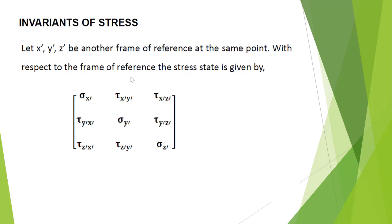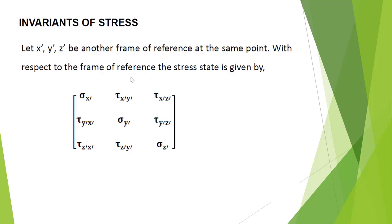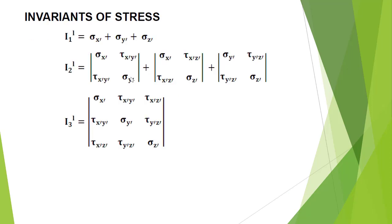The second invariant involves the determinants of the minors of each principal diagonal element. The minor of sigma x-dash is the two by two matrix: sigma y-dash, tau y-dash z-dash, tau y-dash z-dash, sigma z-dash. The second invariant is the sum of the determinants of these minors.